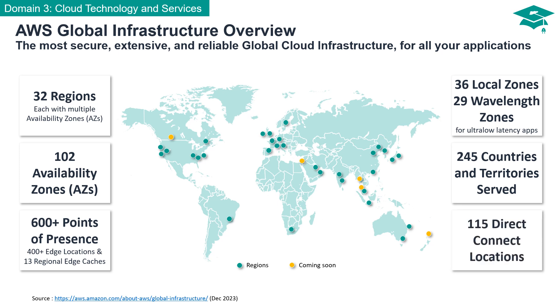For those seeking a direct and dedicated connection to AWS services, there are 115 Direct Connect locations available. This option allows for a secure, low-latency link to the AWS cloud.